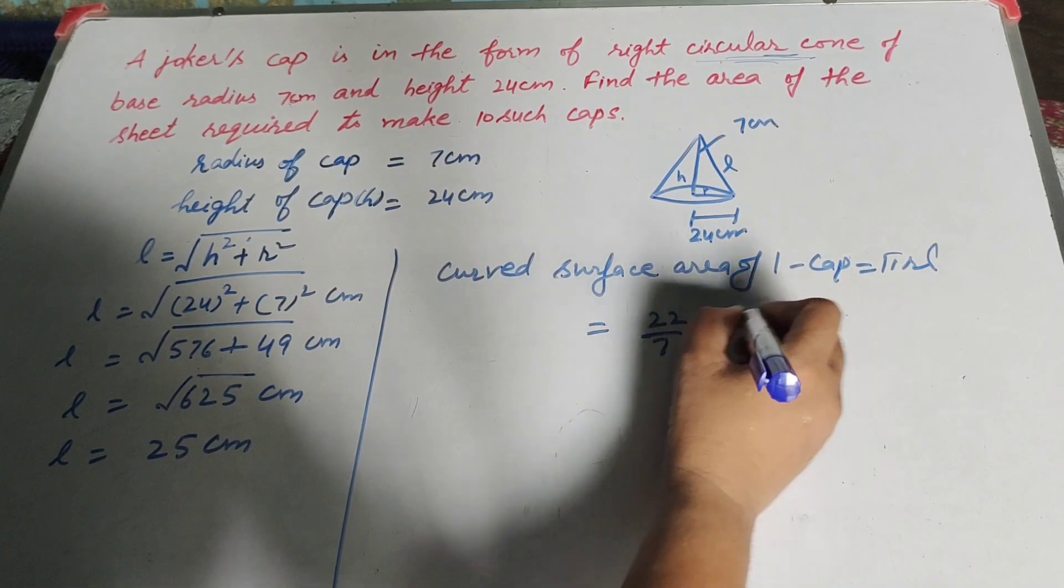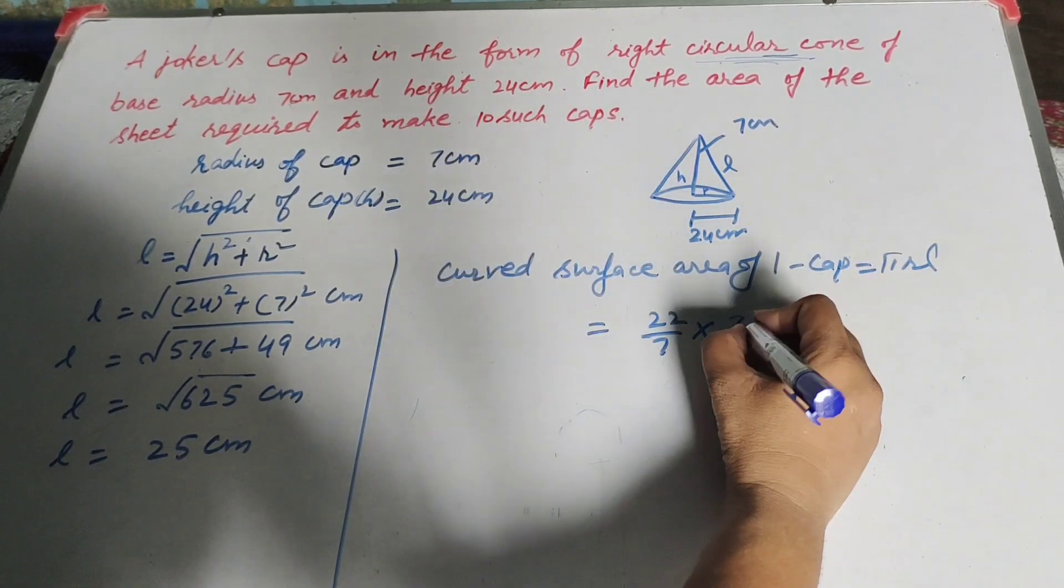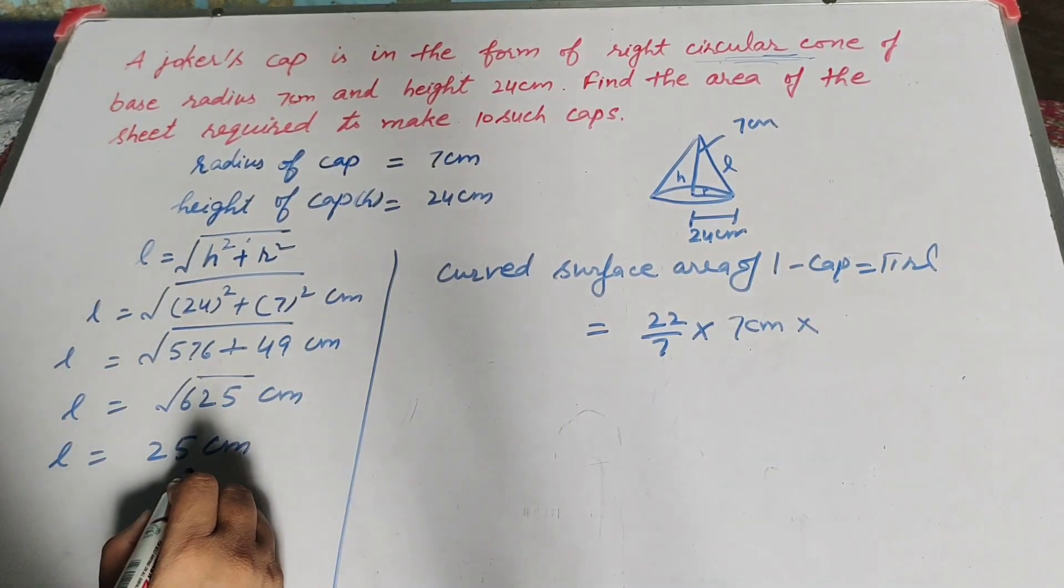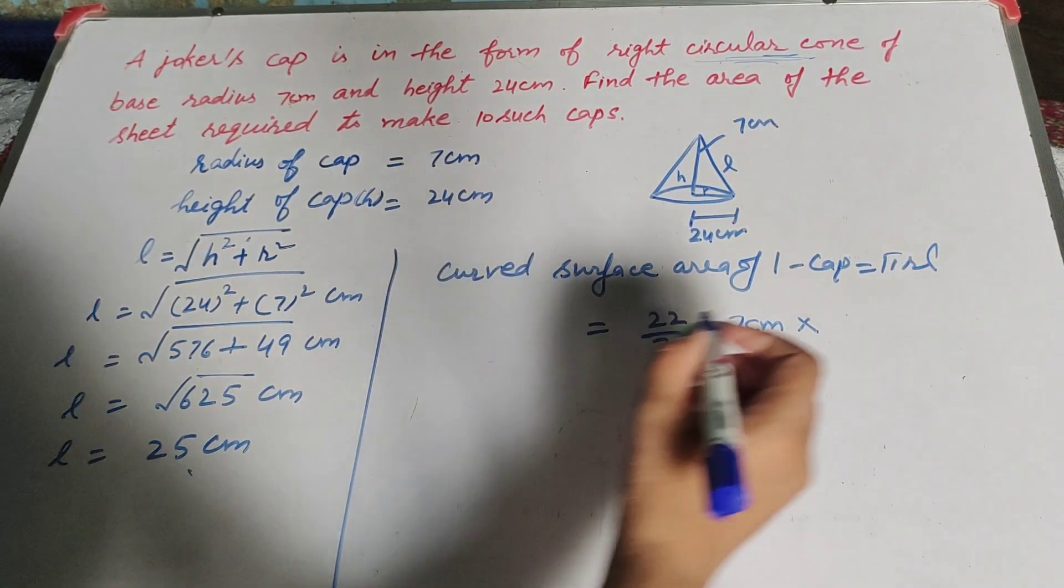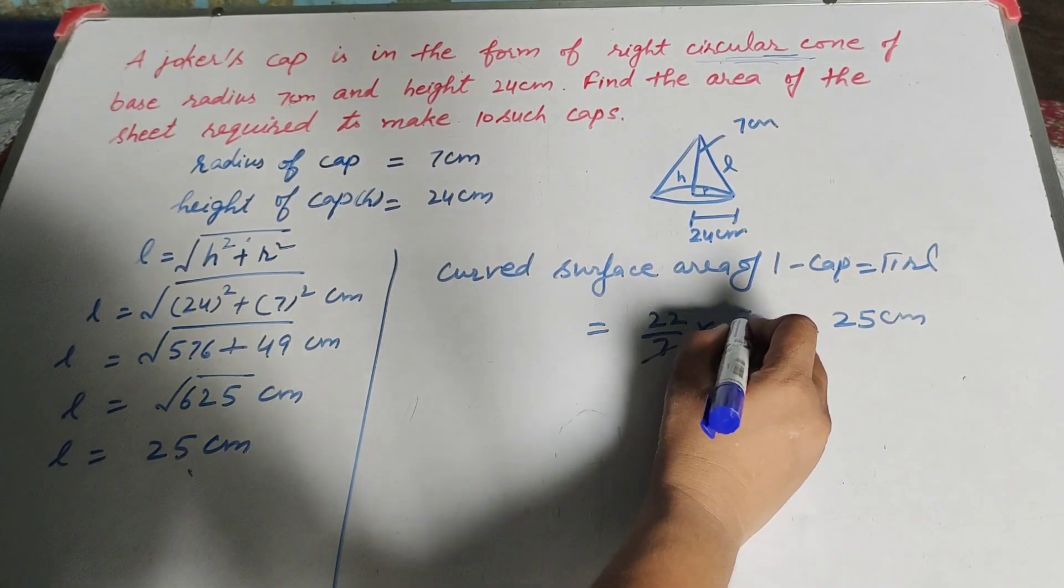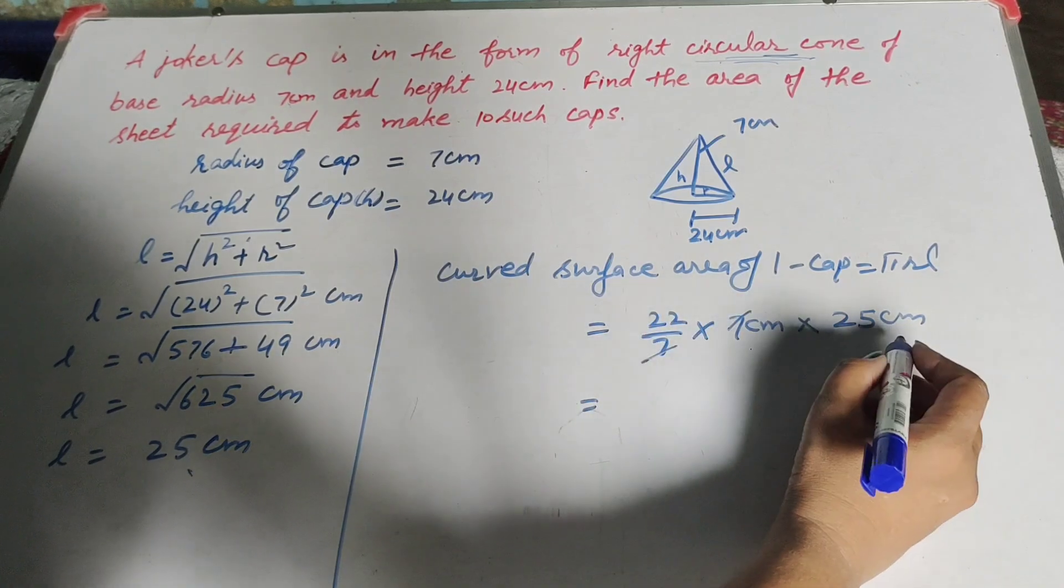Pi, its value is 22 over 7. r is radius, it is 7 cm. L is slant height, that is 25 cm. 7 in denominator and 7 in numerator, both are cancelled.